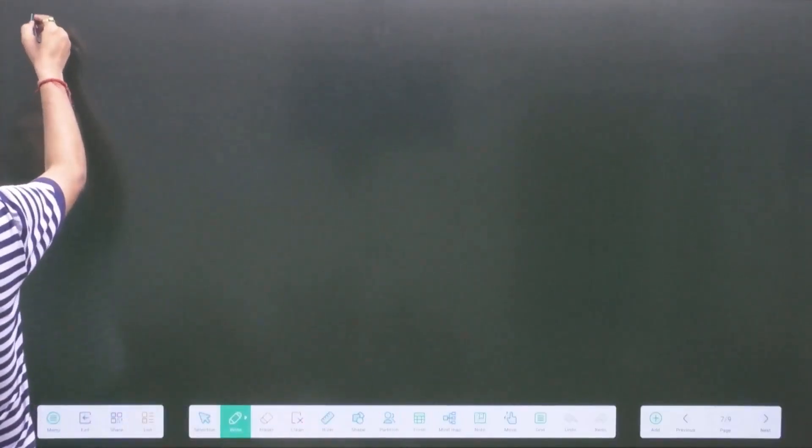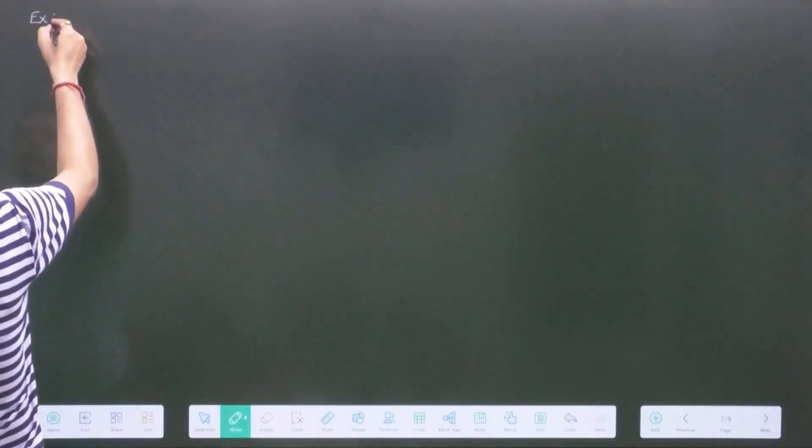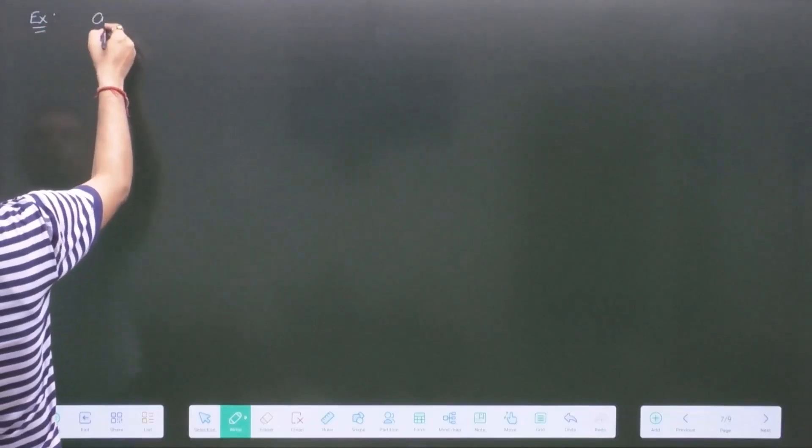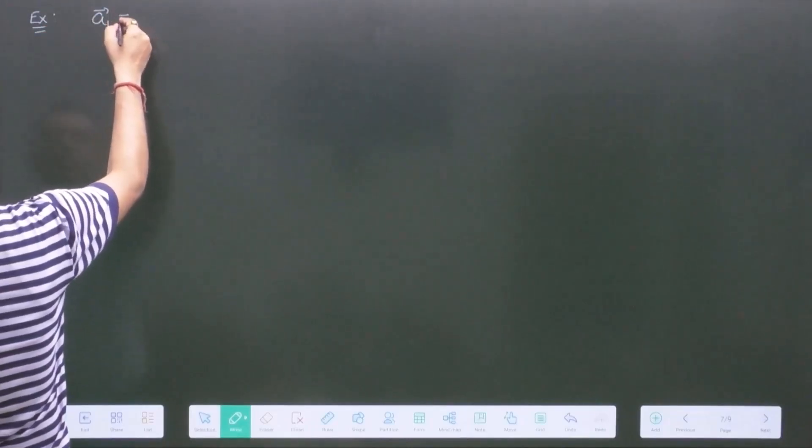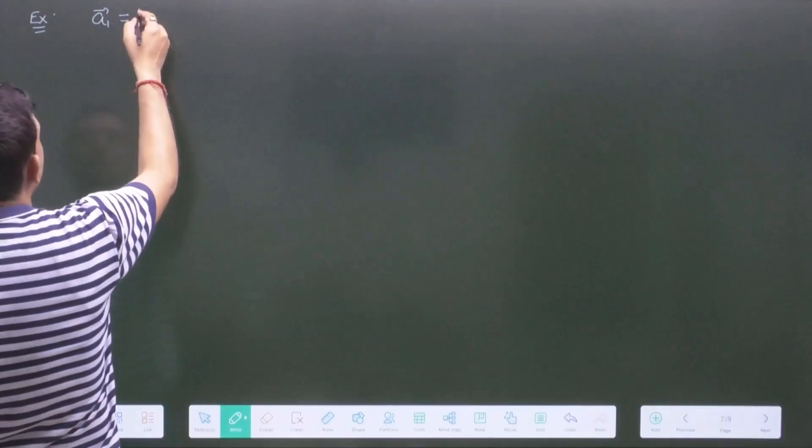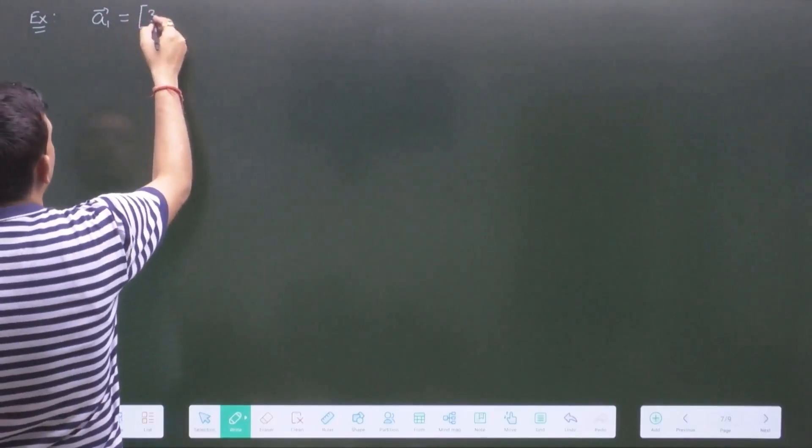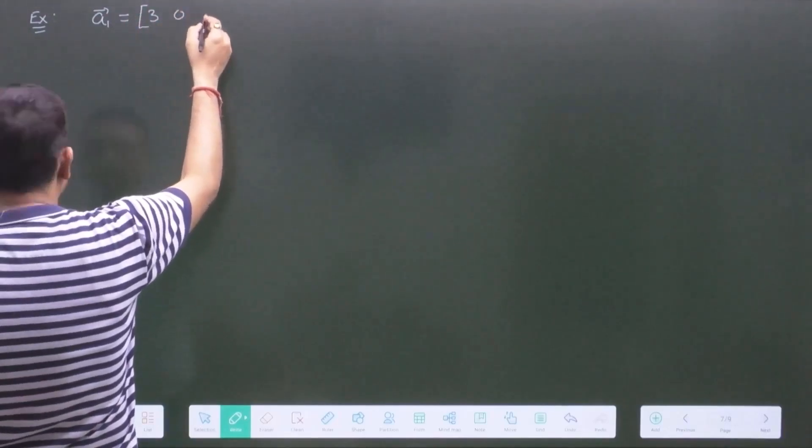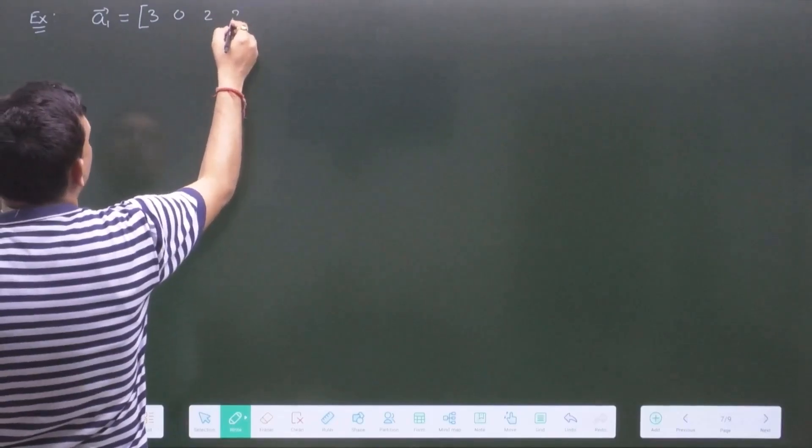So, let us take an example. Now, in each case, we will first check how many vectors are given and how many components are there. So, this is vector a1: 3, 0, 2, 2.